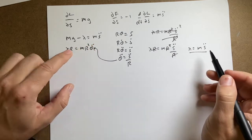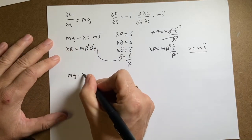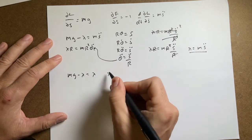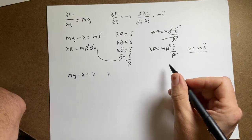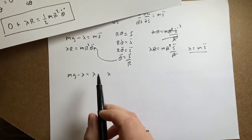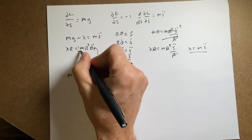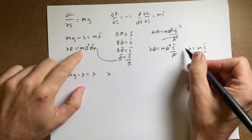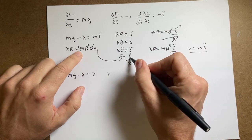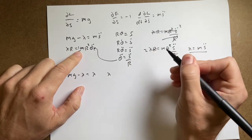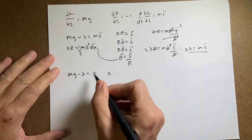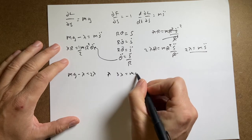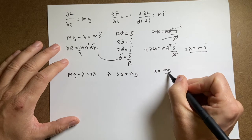Substituting m·s̈ = 2λ into the S equation: mg − λ = 2λ, so mg = 3λ, giving lambda equals mg over 3. The constraint force is lambda times the partial of F with respect to S, which is negative one, so it's negative lambda — meaning it acts opposite to the direction of S. The tension is mg/3.